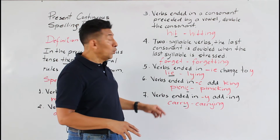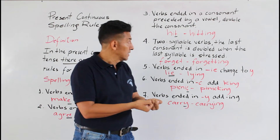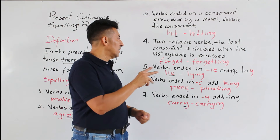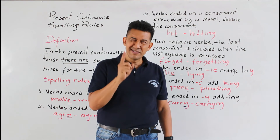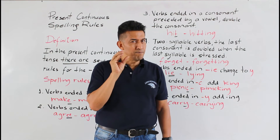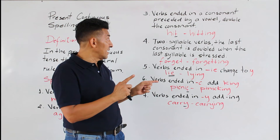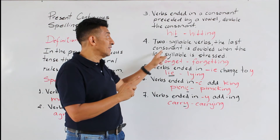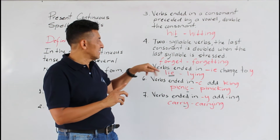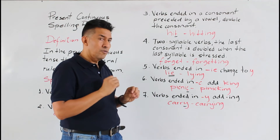Rule number four: two-syllable verbs — the last consonant is doubled when the last syllable is stressed. Hay que tener el oído bien alerta porque dice que son verbos de dos sílabas, y la última consonante se duplica cuando la última sílaba lleva el acento. Tenemos el ejemplo: forget.